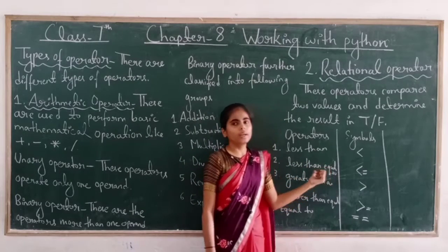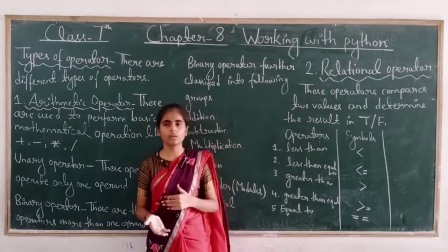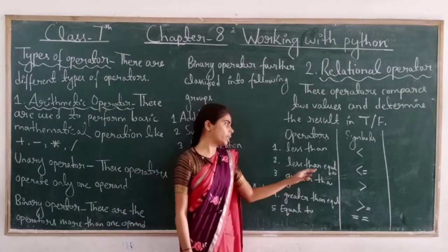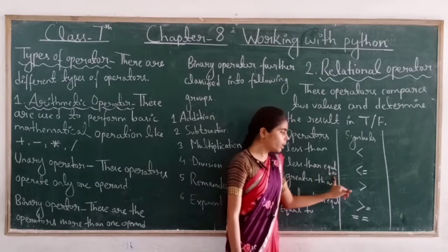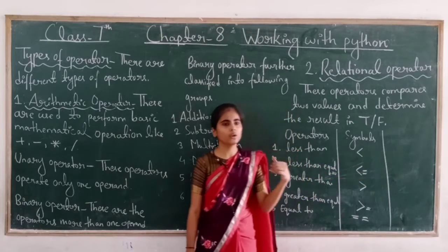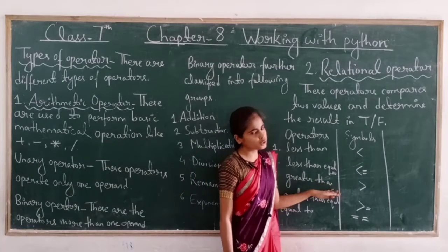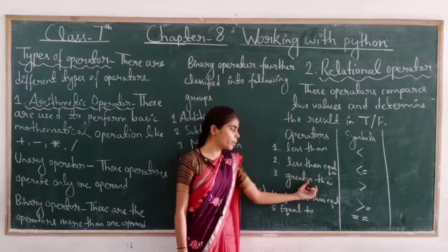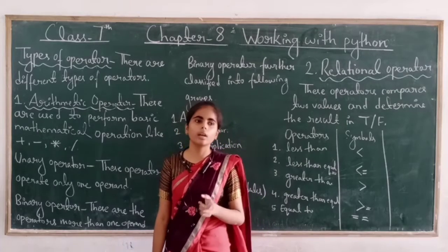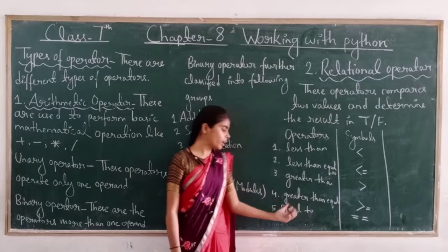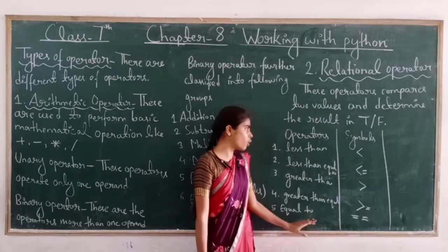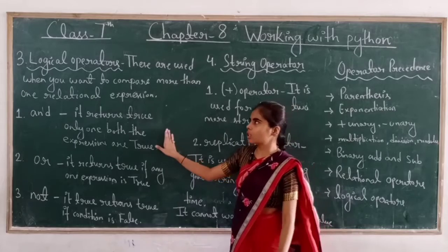For Less Than or Equal To, if a value is less than or equal to the second value, we use this operator and it returns true; otherwise false. For Greater Than, when values are greater we use that operator and it returns true; otherwise false. Similarly for Greater Than or Equal To. And if we want to find equal values between two values, we use the Equal To operator.